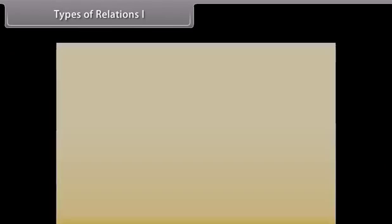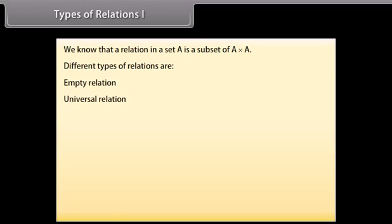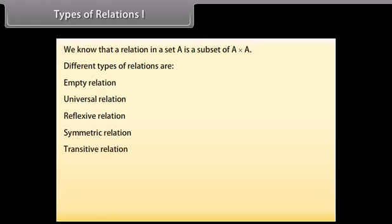Types of relations. We know that a relation in a set A is a subset of A cross A. Different types of relations are: empty relation, universal relation, reflexive relation, symmetric relation, transitive relation, and equivalence relation. Let us go through them one by one.